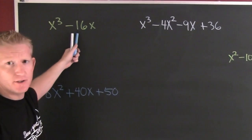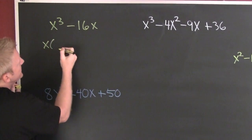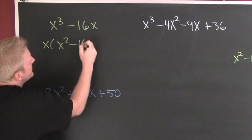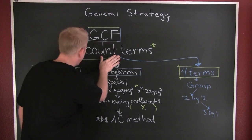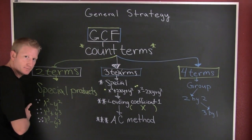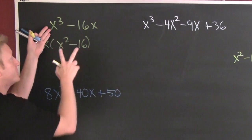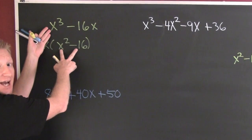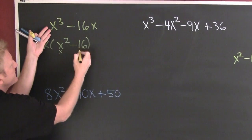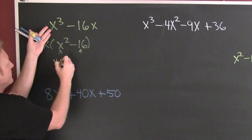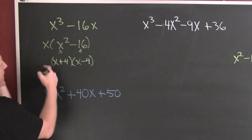Let's apply that strategy. First rule: take out a common factor — pull out x. Left on the inside you've got x² minus 16. Count the terms: two terms, so look for special products. Is x² the square of x? Yes. Is 16 the square of 4? Yes. So this factors as (x + 4)(x − 4). Bring that x out front.